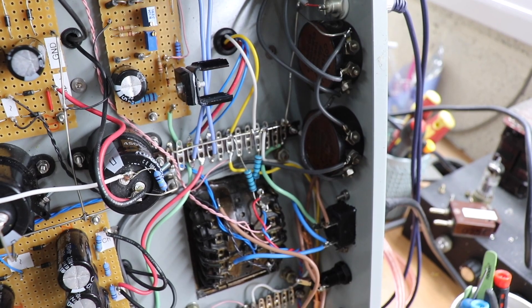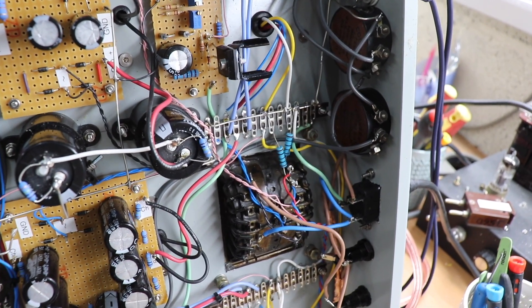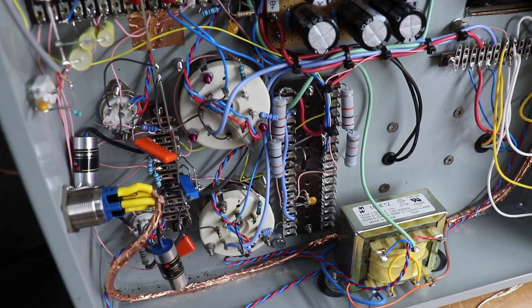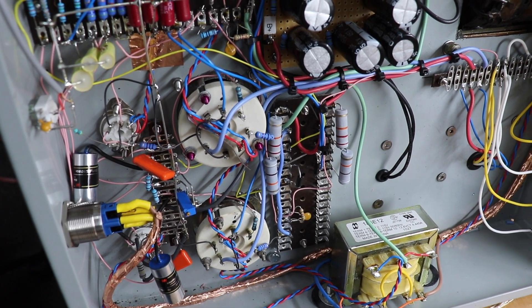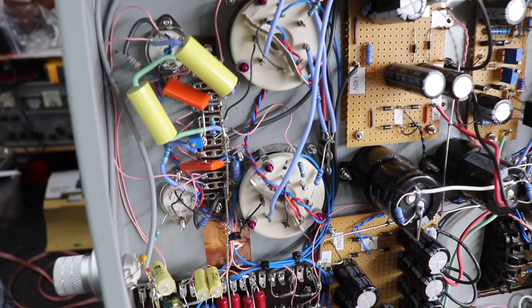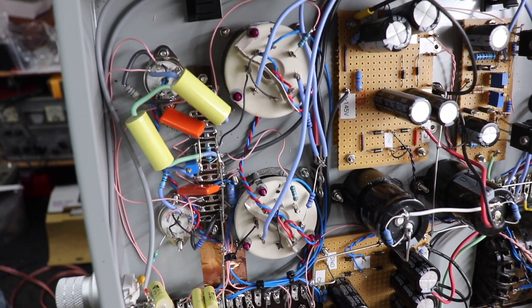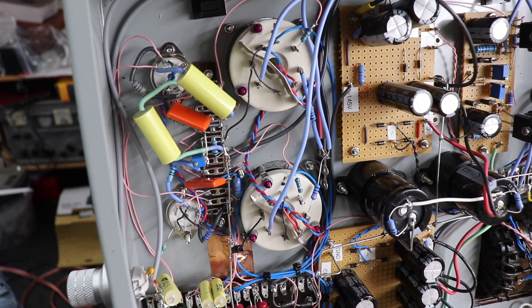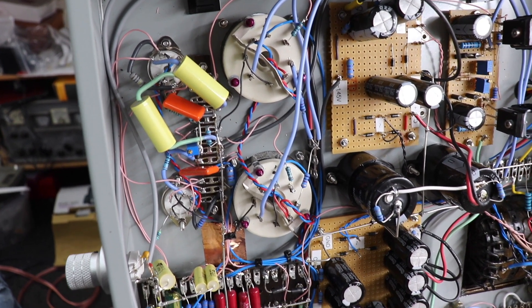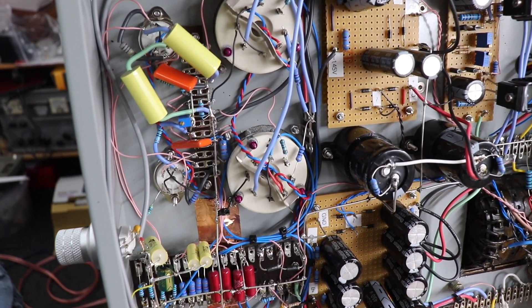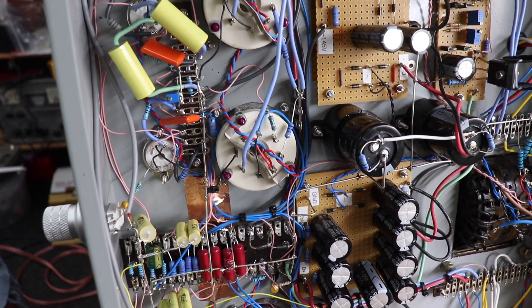Those are my bias adjusting pots. And, those are the bases of GU50s. These valves get really, really hot. One thing I did notice, they get really hot. This chassis gets very warm when the thing is running. And, I guess that's probably not surprising, because the quiescent current of each tube is about 70 milliamps. So, I think you can expect a bit of heat.